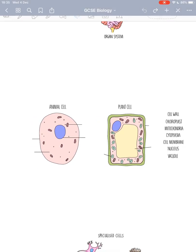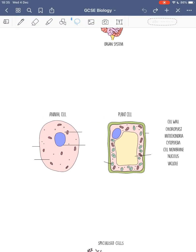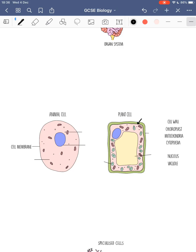The first one is the cell membrane — right on the outside of the animal cell, and just beneath the cell wall of a plant cell. It's important for controlling what goes into and out of the cell. The nucleus, this big blue ball, contains the DNA and controls the cell's activities. It's basically the boss of the cell — it tells it what to do.